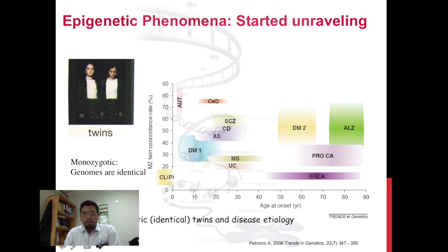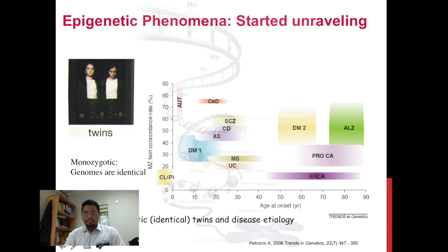Some recent studies investigated global and locus-specific differences in DNA methylation and histone modification in a cohort of 40 identical twins aged 3 to 74 years. The authors concluded that there is an age-dependent epigenetic drift observed in these monozygotes, and it makes sense that there should be an increasing number of dissimilar epigenetic changes in aging co-twins. In the given figure, age at disease onset and concordance rate of monozygotic twins are plotted, with the x-axis representing age in years and the y-axis showing percentage concordance among twins.